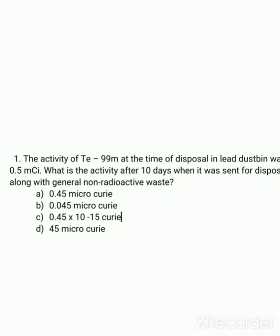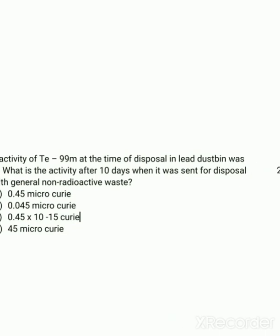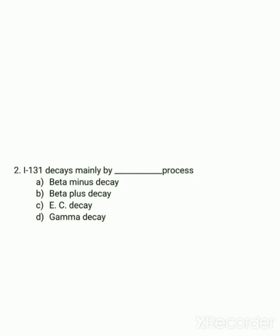The second question: Iodine-131 decays mainly by which process? Iodine-131 decays by two processes — beta-minus decay and gamma decay — but mainly it decays by beta-minus decay.